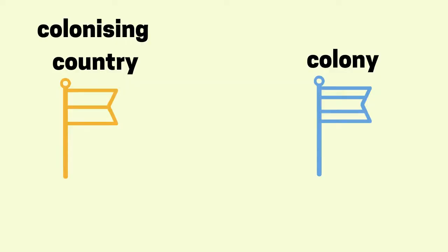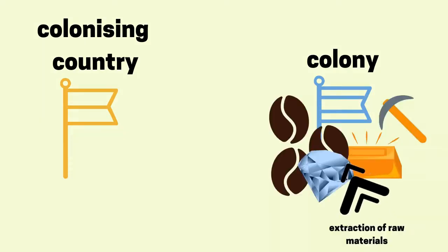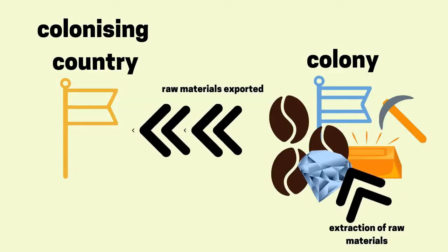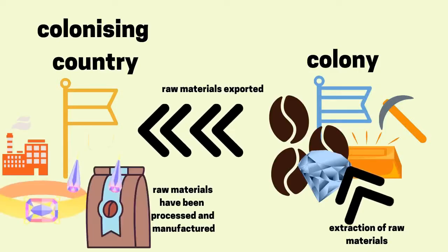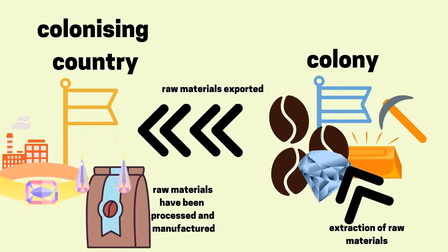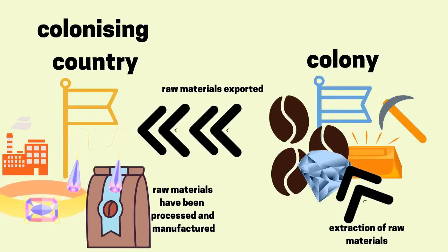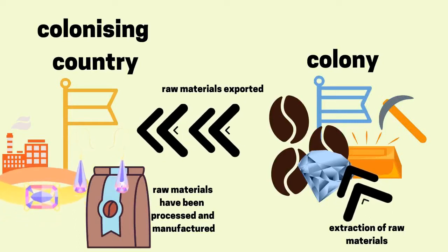For example, a colonizing country might have prioritized the extraction of raw materials from their colony, and they might have really wanted those raw materials to be exported and then processed somewhere else. They didn't prioritize the manufacturing of those raw materials in their colony. That means that once that colony gained independence, they would have really struggled to develop in terms of manufacturing goods, because their focus was on extracting raw materials.